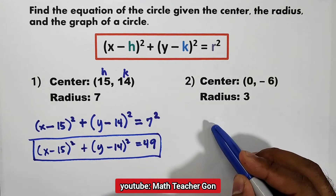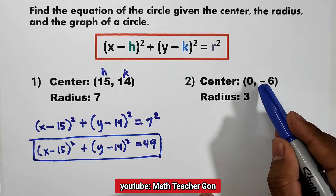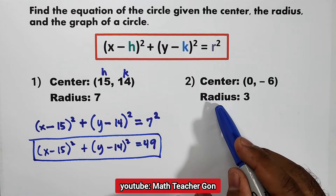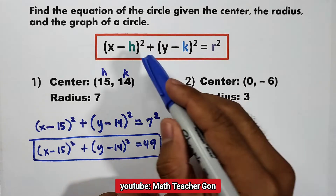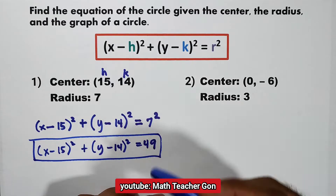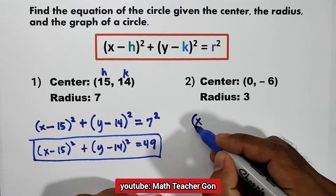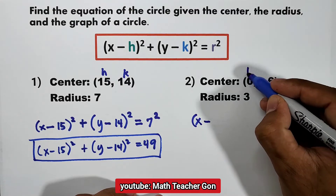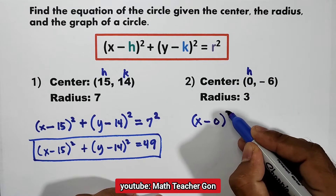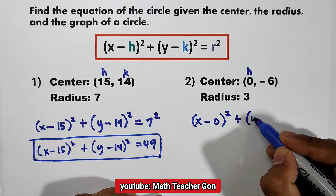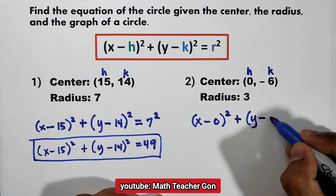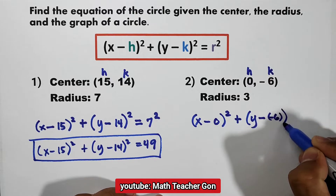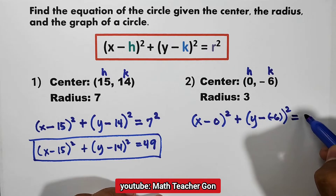Let us have item number 2. The center is equal to (0, negative 6) and the radius is 3. Again, let us use the standard form or the center-radius form. The quantity of x minus h, where h is equal to 0, squared, plus y minus k, where k is equal to negative 6, squared, is equal to r squared where r is equal to 3.